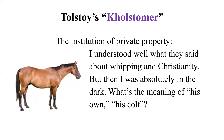But in this story, Tolstoy does something different. He makes the horse do the talking. So this story called Strider is narrated by a horse. Since the horse is narrating, the horse's point of view differs from others' point of view. Look at the example — how the horse understands private property: 'I understood well what they said about whipping and even Christianity, but then I was absolutely in the dark. What is the meaning of his own, his called?' So the horse doesn't understand how it belongs to an owner. The horse thinks it has individuality, but how can the owner claim it belongs to him as private property. So this is how defamiliarization works — one of the ways in which it works.